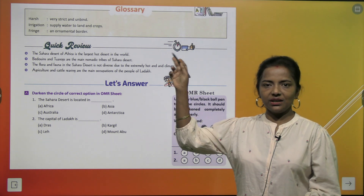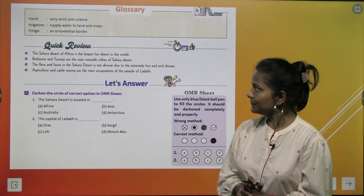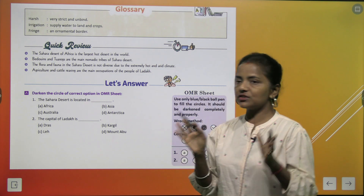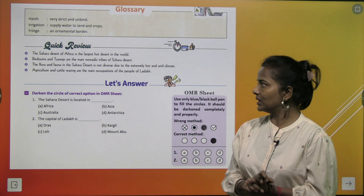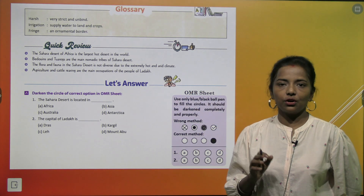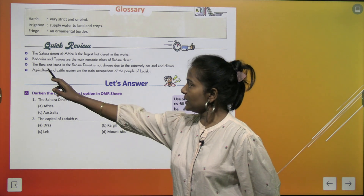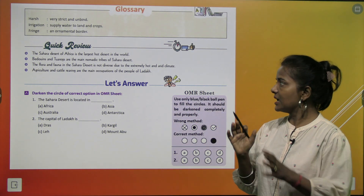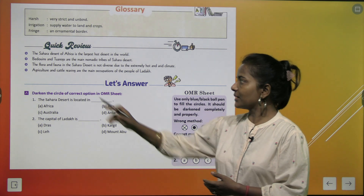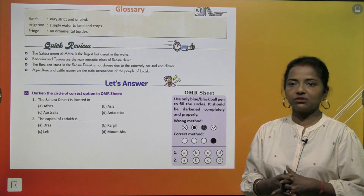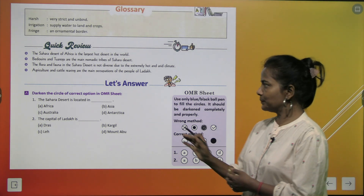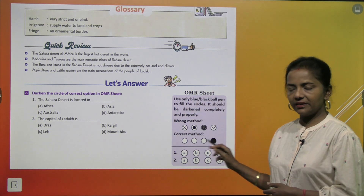Now children, here is the glossary — just go through the word meanings. And a quick review of the chapter: the Sahara desert of Africa is the largest hot desert in the world. Bedouins and Tuaregs are the main nomadic tribes of the Sahara desert. The flora and fauna in the Sahara desert is not diverse due to the extremely hot and arid climate. Agriculture and cattle rearing are the main occupations of the people of Ladakh. Now let's answer — darken the circle of the correct option.